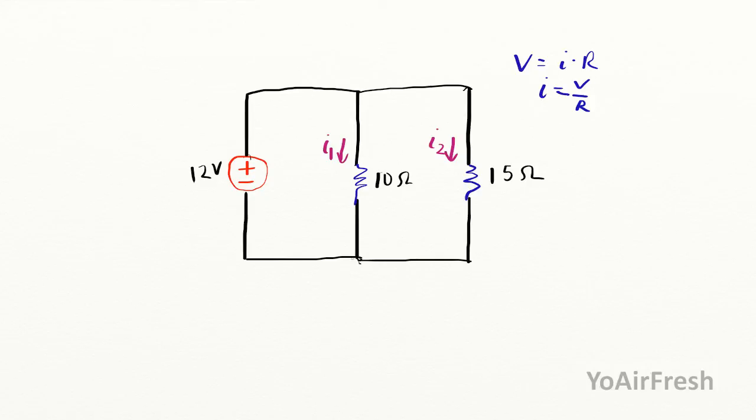Now you may have noticed that these resistors are in parallel. The first instinct would sometimes be to combine them, but we would lose one of the currents. Then we'd only have one current, and that wouldn't be the current on each of these branches. We need to attack it a different way.